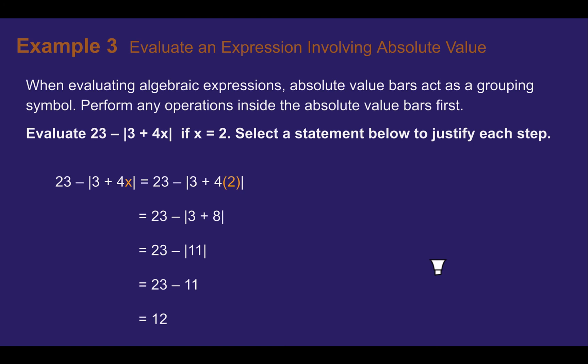Example 3. Evaluate an expression involving absolute value. When evaluating algebraic expressions absolute value bars act as grouping symbols. Perform any operations inside the absolute value bars first. So evaluate 23 minus the absolute value of 3 plus 4x if x equals 2. Then select the statement below to justify each step.